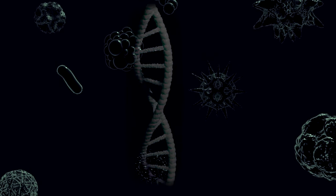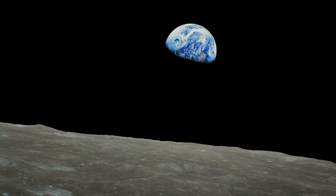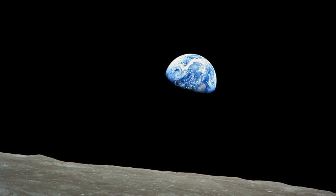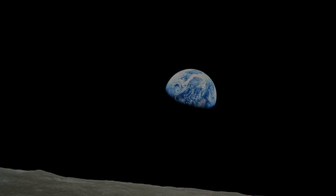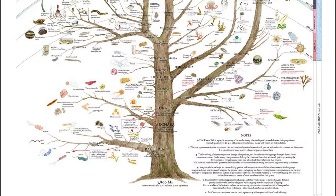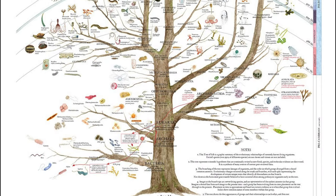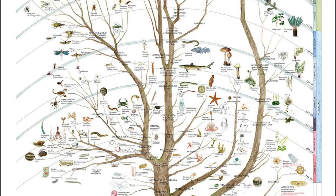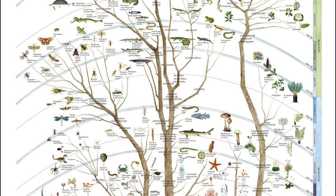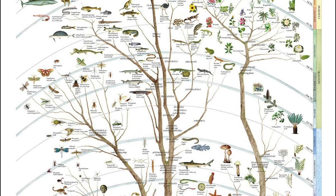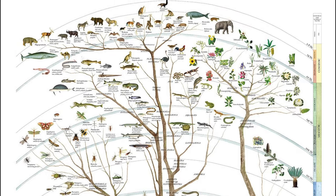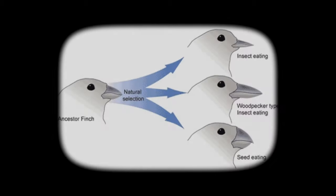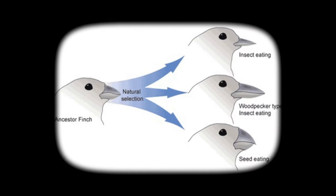Life on earth has radiated across every corner of the planet and has adapted to thrive over billions of years. Evolution does not work as a ladder, but rather a tree of many branches. No species is more evolved than another. Each species is uniquely adapted to its environment because of genetic mutations which have gradually sculpted variation over time. The major constant of biology is change.